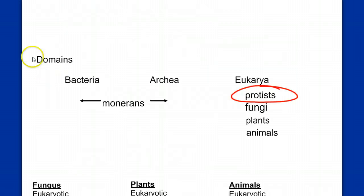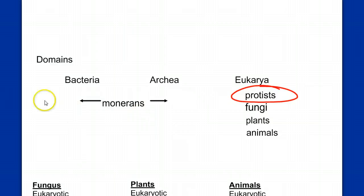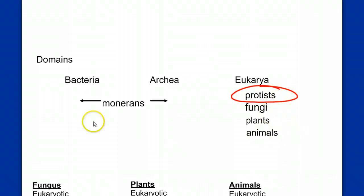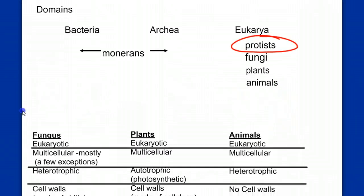When we go to classify the monera — the bacteria — it's easy. If you're prokaryotic, you're a bacteria. But the four kingdoms that make up the Eukarya domain — protists, fungus, plants, and animals — it's not as easy to define.